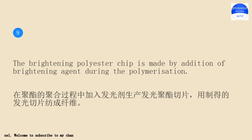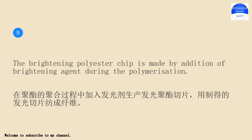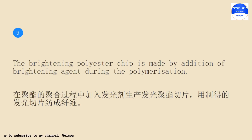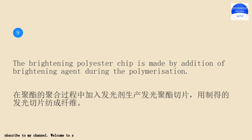The brightening polyester chip is made by addition of brightening agent during the polymerization.